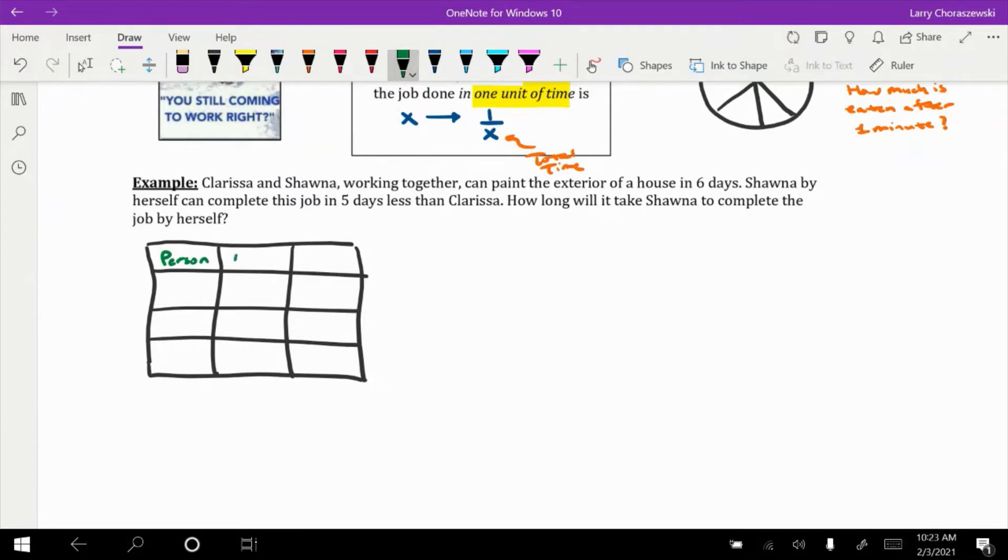The second column is going to be for any time values that we can get out of there. And then the last column is going to be representing the amount done after one unit of time. And basically what we'll do is we'll take any time amounts that we can construct and reciprocate them to get the fractions that we'll be populating in this last column.